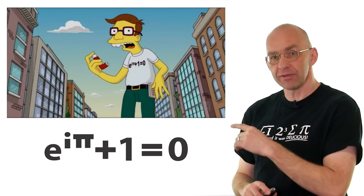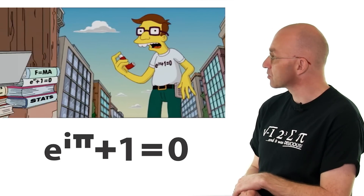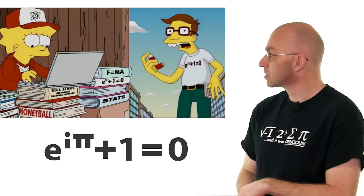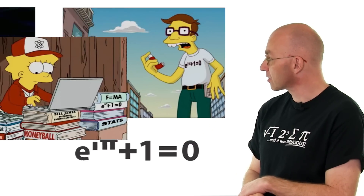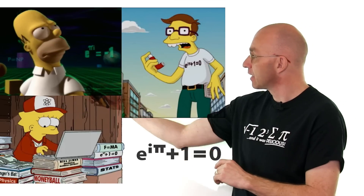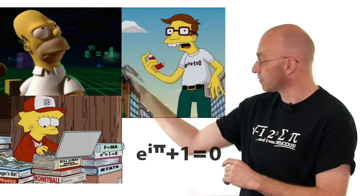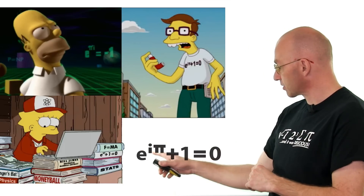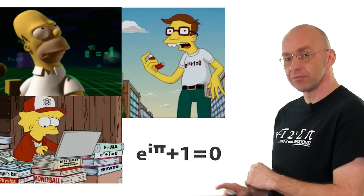Before we do this, let's look at the other two instances of this equation. The first one is on a maths book that Lisa is using, and the second one occurs in an episode where Homer stumbles into the third dimension. It's just a different form where you take minus one on each side, and then it becomes e to the i pi is equal to minus one.